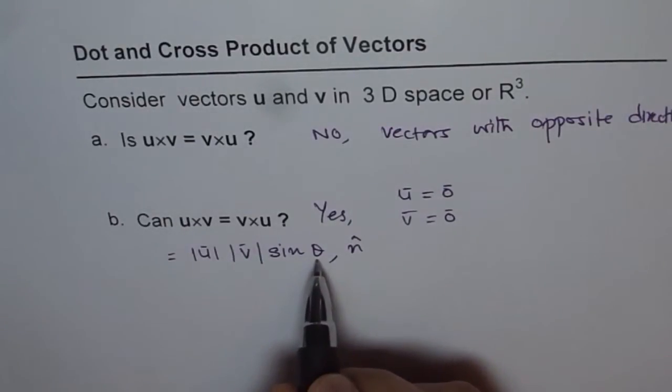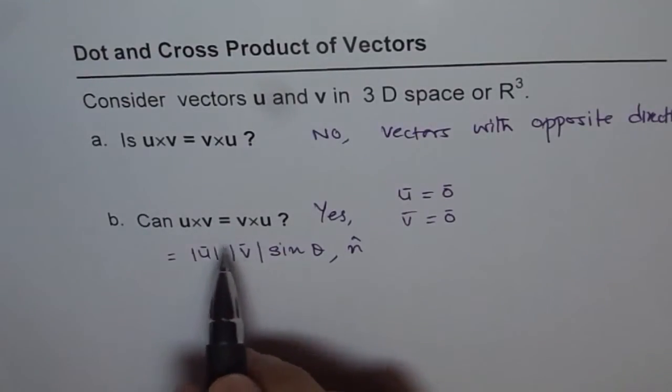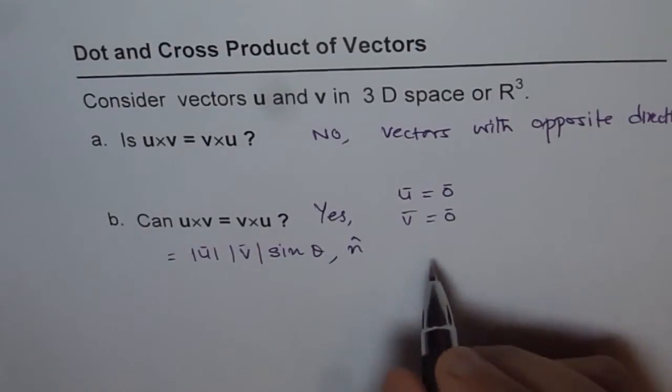Now, what happens if sine theta is 0? If theta is 0 or 180 degrees, in that case the product will be 0. Now, 0 vector will be equal to 0 vector. So these are the three conditions.